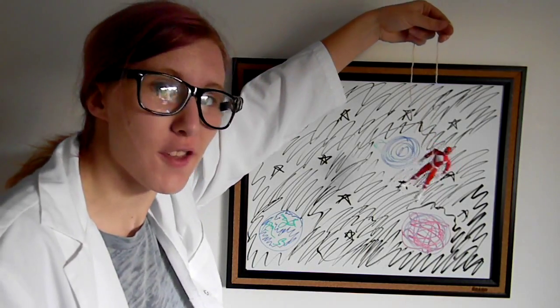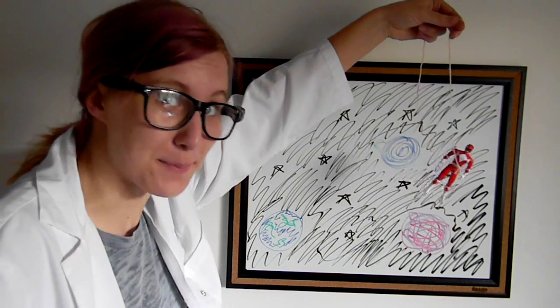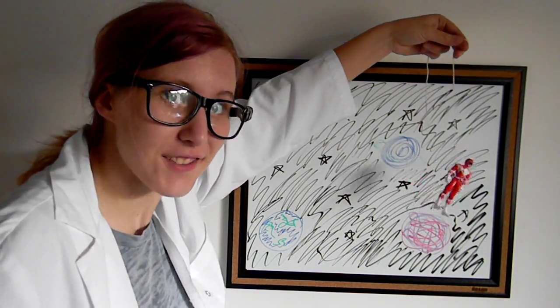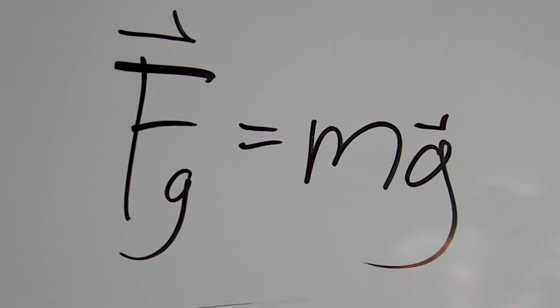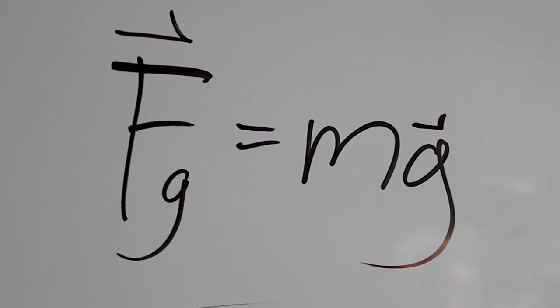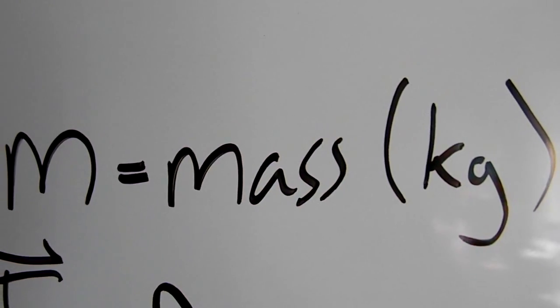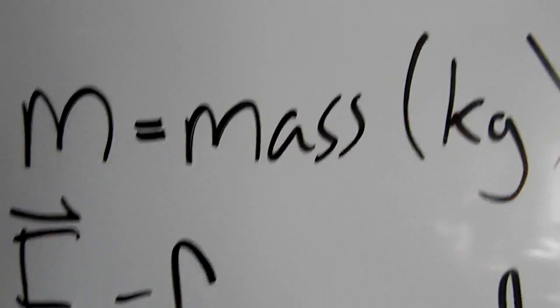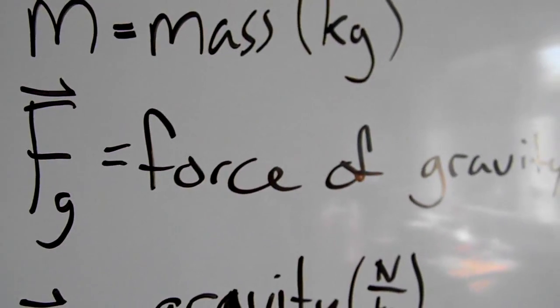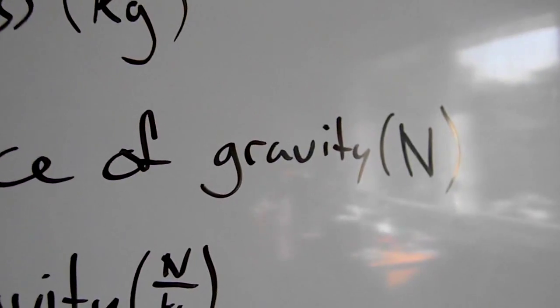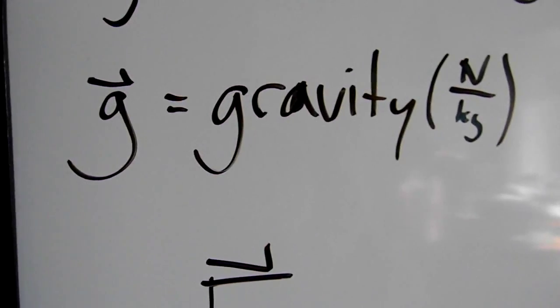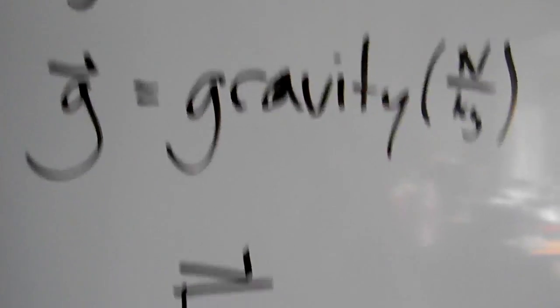There's a reason you don't hear people say that they're massless in space — because they still have mass. Get ready, because I'm going to throw an equation at you. That's my thing, I throw equations at people. Fg equals mg, where m is mass measured in kilograms, Fg is force of gravity measured in newtons, and g is gravity in newtons per kilogram.